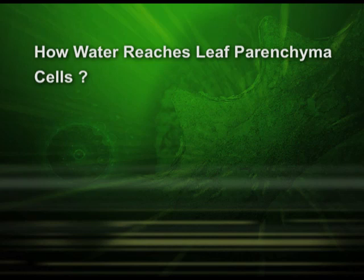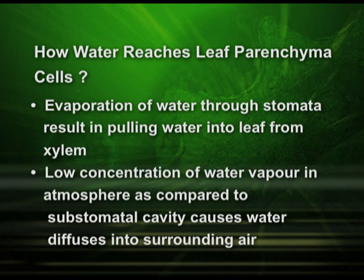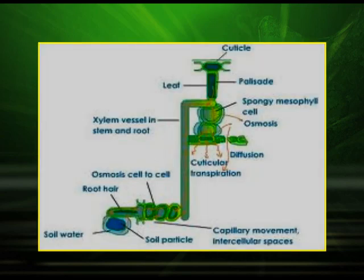An important question is: how does water reach the leaf parenchyma cells? It is through the evaporation of water through stomata, which results in pulling water into the leaf from the xylem. Also, the low concentration of water vapor in the atmosphere compared to the sub-stomatal cavity causes water to diffuse into the surrounding air. In the diagram, you can see soil water enters the root, osmosis moves it cell to cell, then water moves up through the xylem vessel in the stem, and finally to the leaf, entering the palisade cells where it is used in photosynthesis.